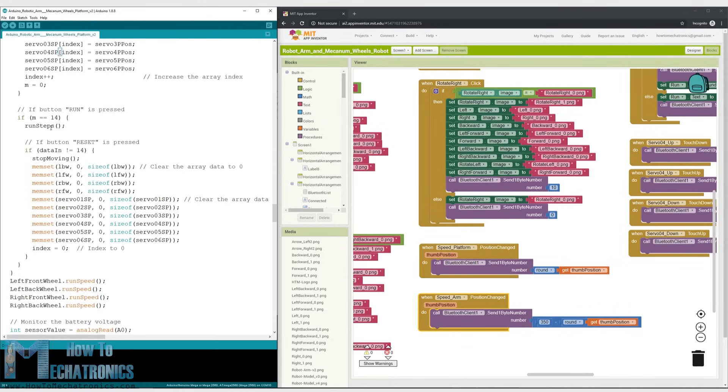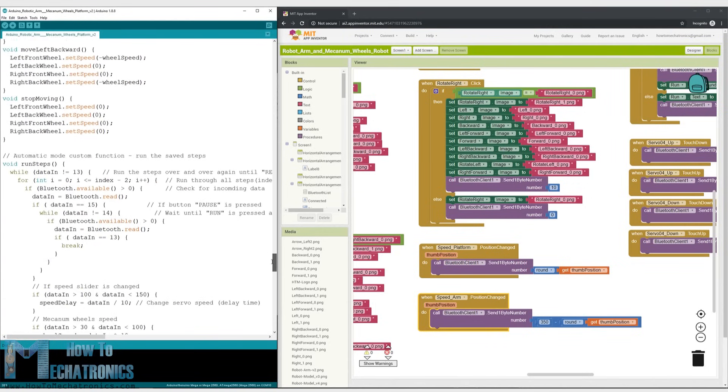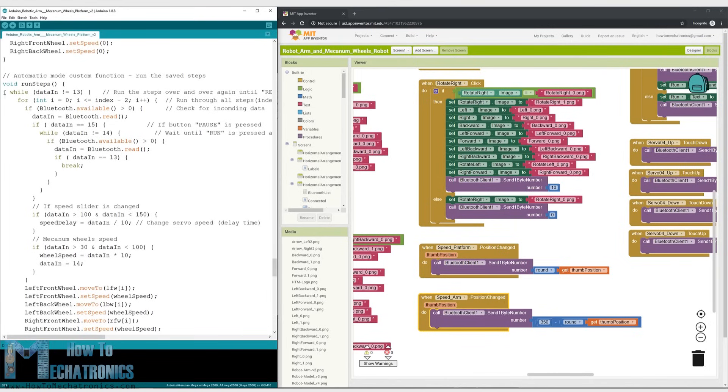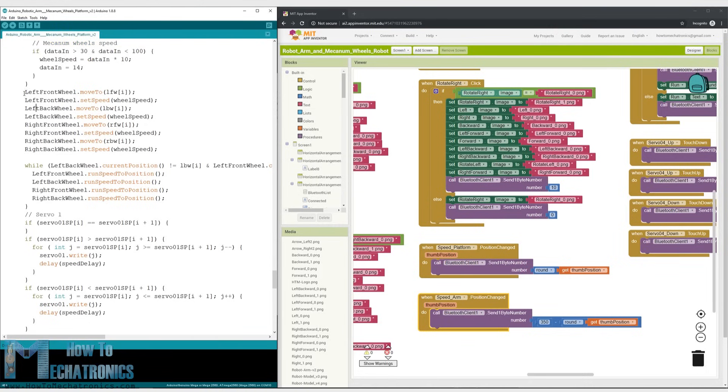Then when we press the run button we call the run steps custom function. This custom function runs through all stored steps using some for and while loops. We should note that it starts from the first position and goes to the last position and repeats over and over again. Therefore when saving the steps we actually need to position the robot in a way that the first step has the same position as the last step.